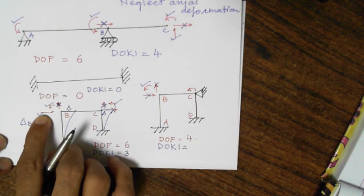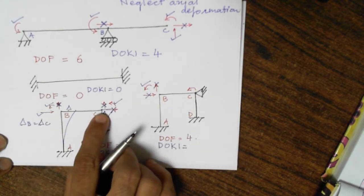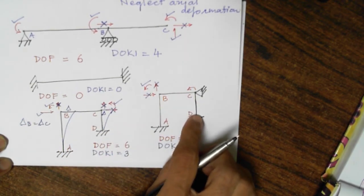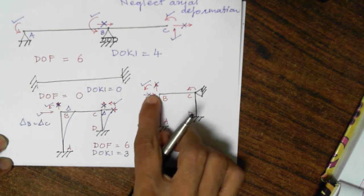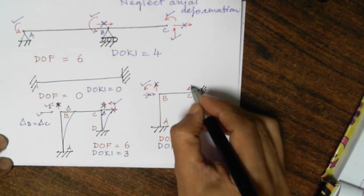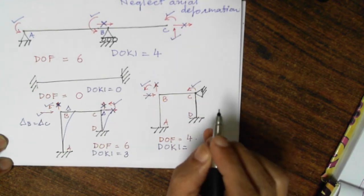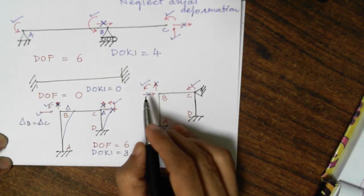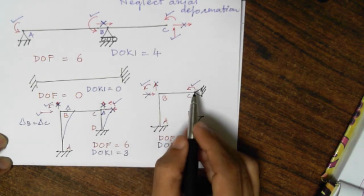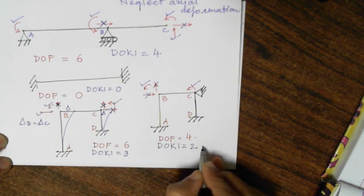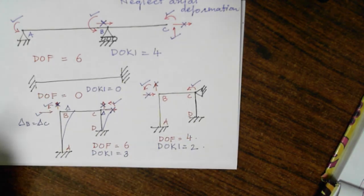In the previous portal frame example, delta-B in x direction was possible because it was not supported and it was a sway frame. This is the classic non-sway frame, and that is why sway displacement of B in x direction is not possible. What about rotation at B — yes, it is possible. So degree of kinematic indeterminacy for this structure is 1 and 2. The degree of freedom was 4, and degree of kinematic indeterminacy is 2.